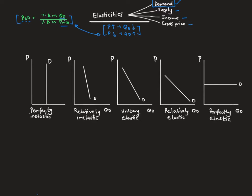If we have a look below, we have five different cases. These five cases represent five different elasticities or sensitivities to a price change. Using the unitary elastic case as our neutral case, anything to the right — the relatively elastic and perfectly elastic cases — represents luxury products. Anything on the left — the perfectly inelastic and relatively inelastic cases — represents necessity products.